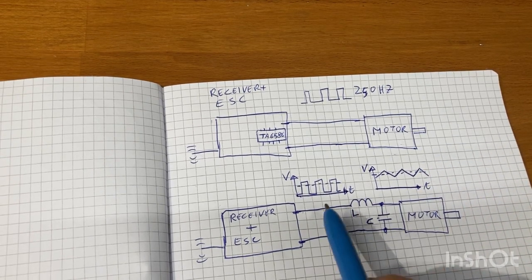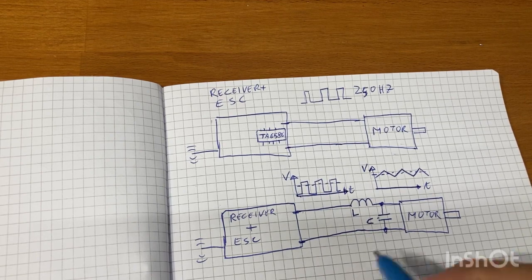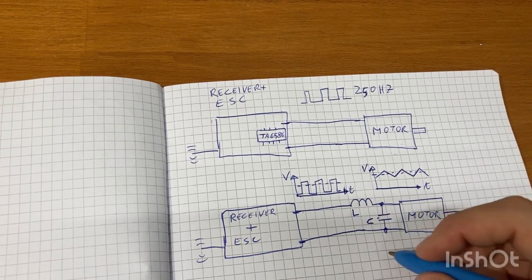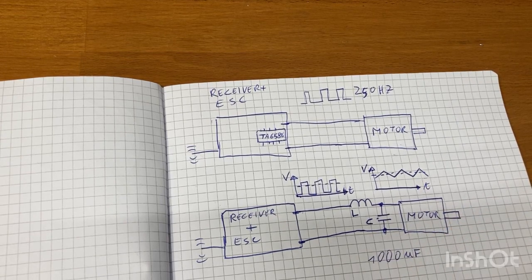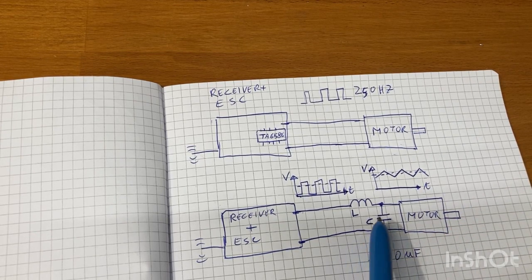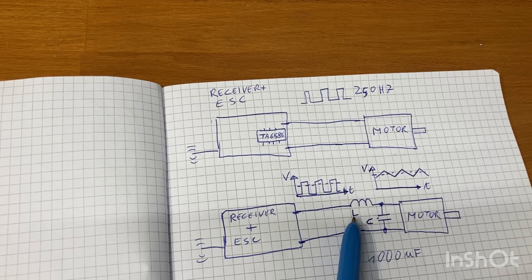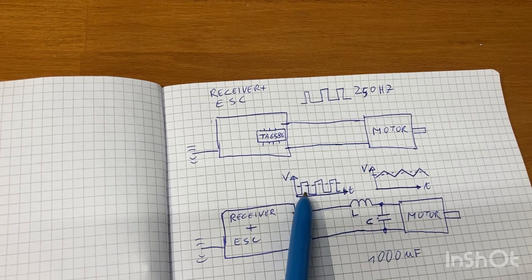Since the frequency is very low, 250Hz, the capacitor needs to be quite big. I would say a thousand microfarads would be good. The inductor is needed to reduce the current spikes on the PWM controller.